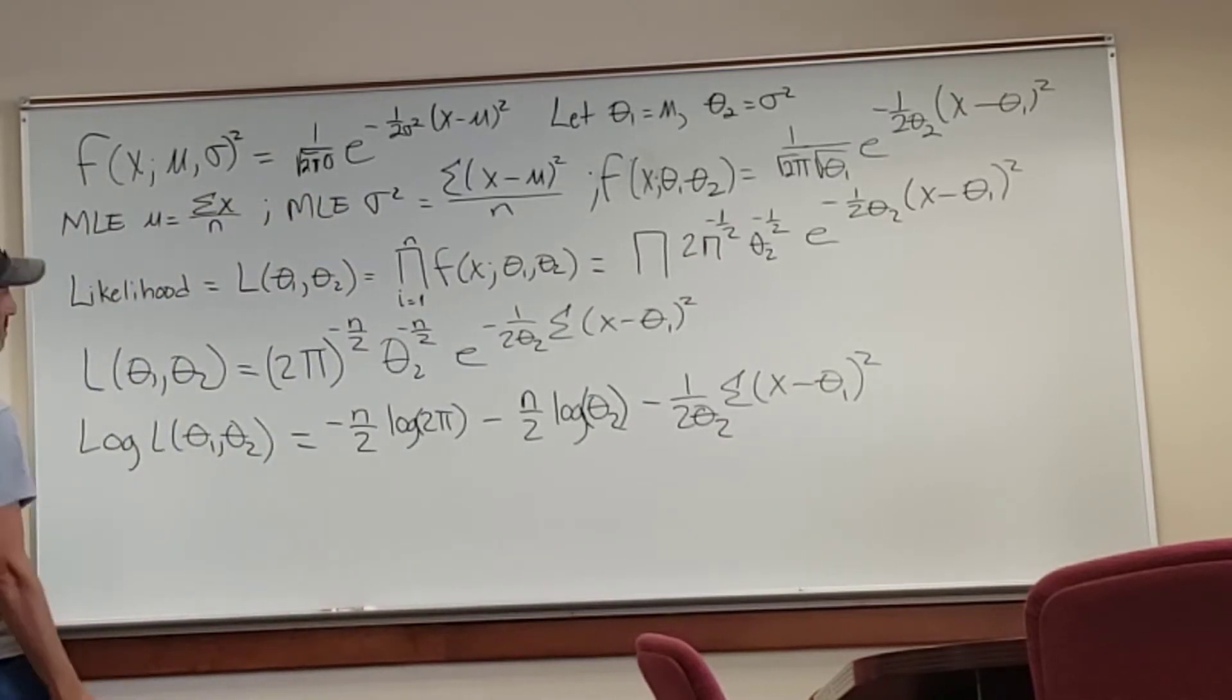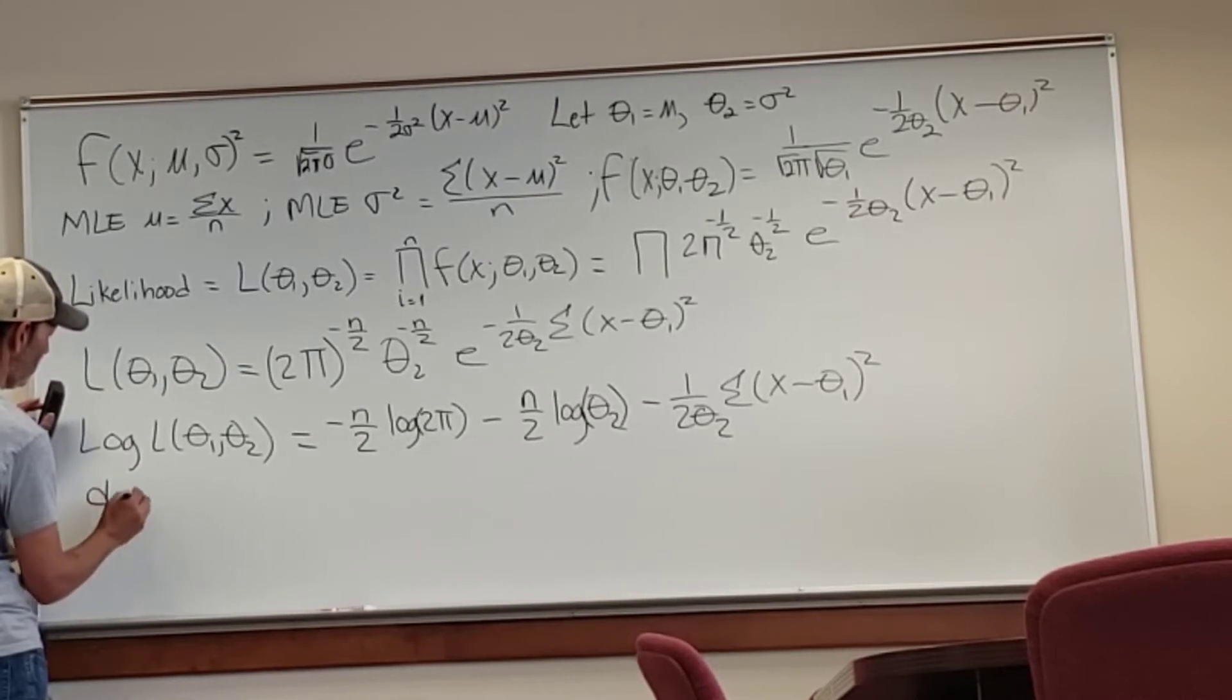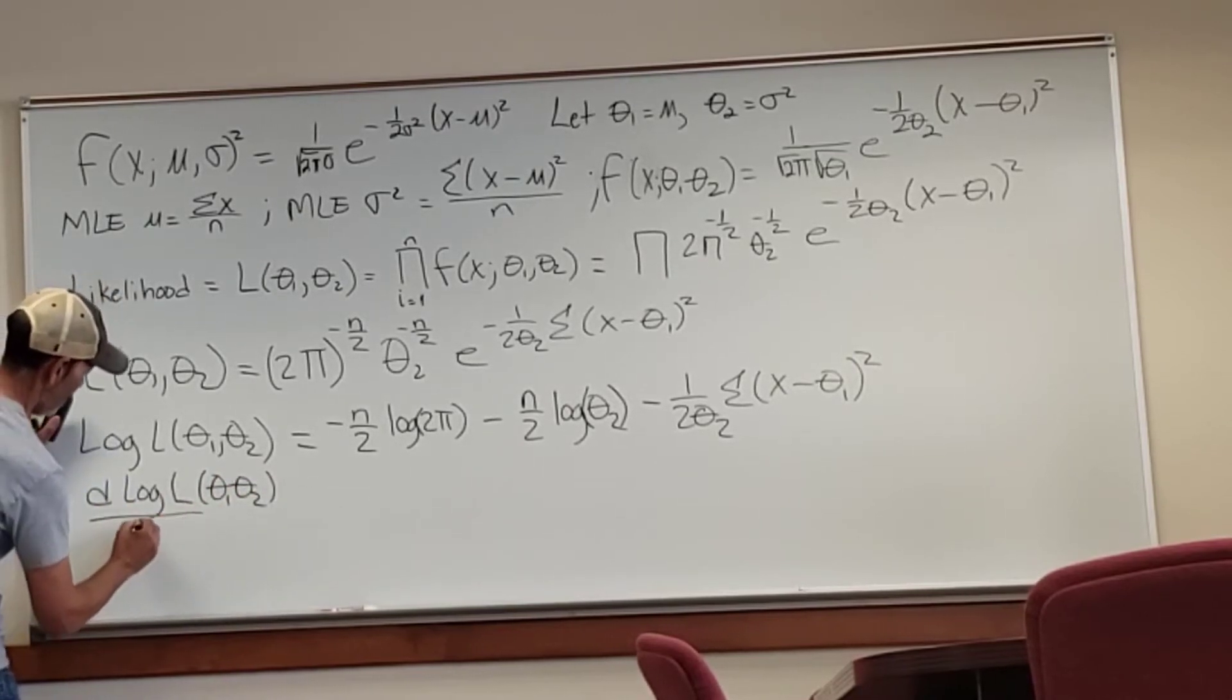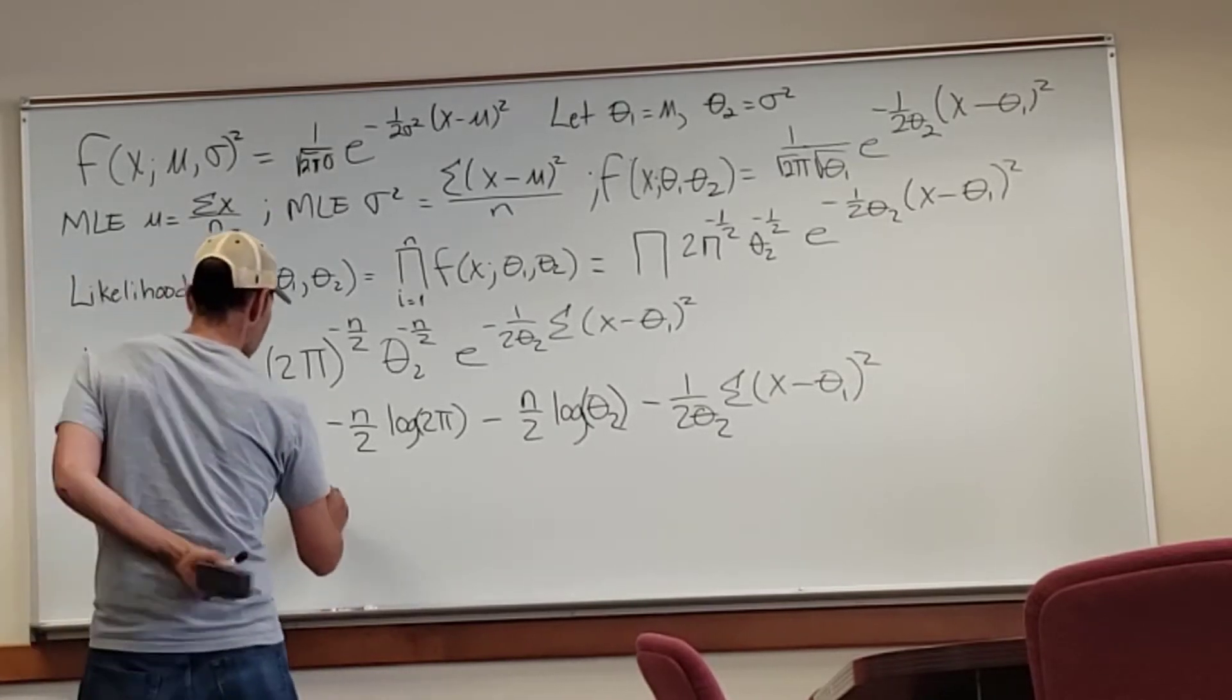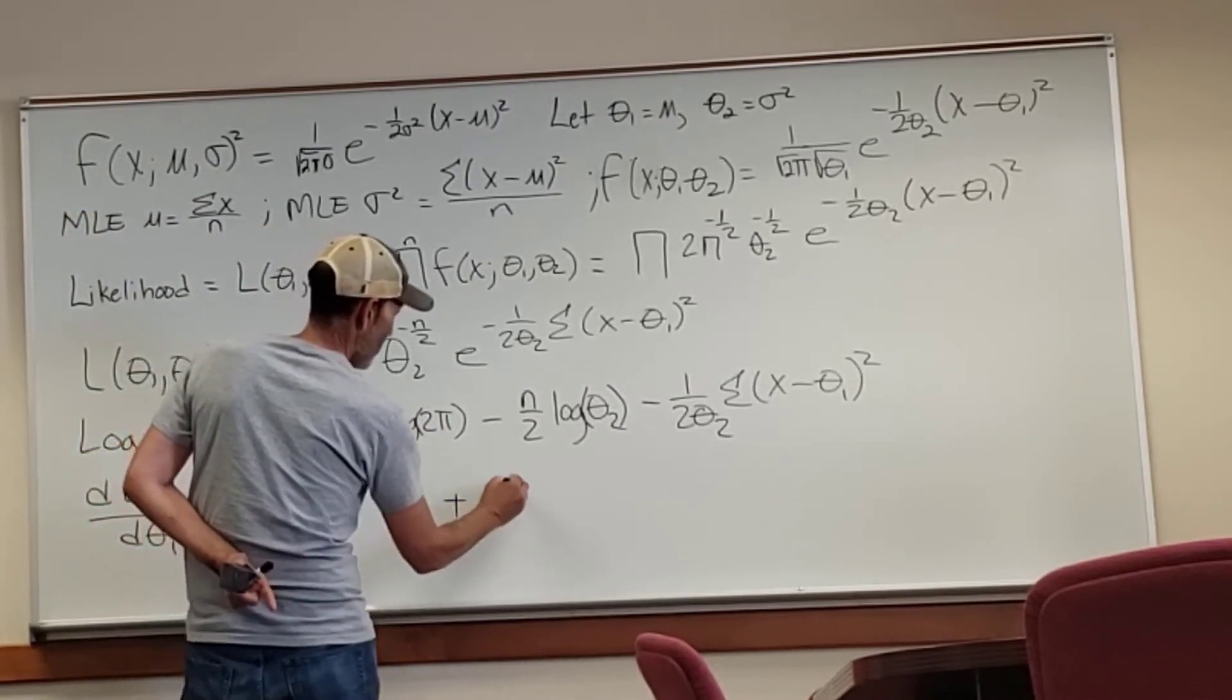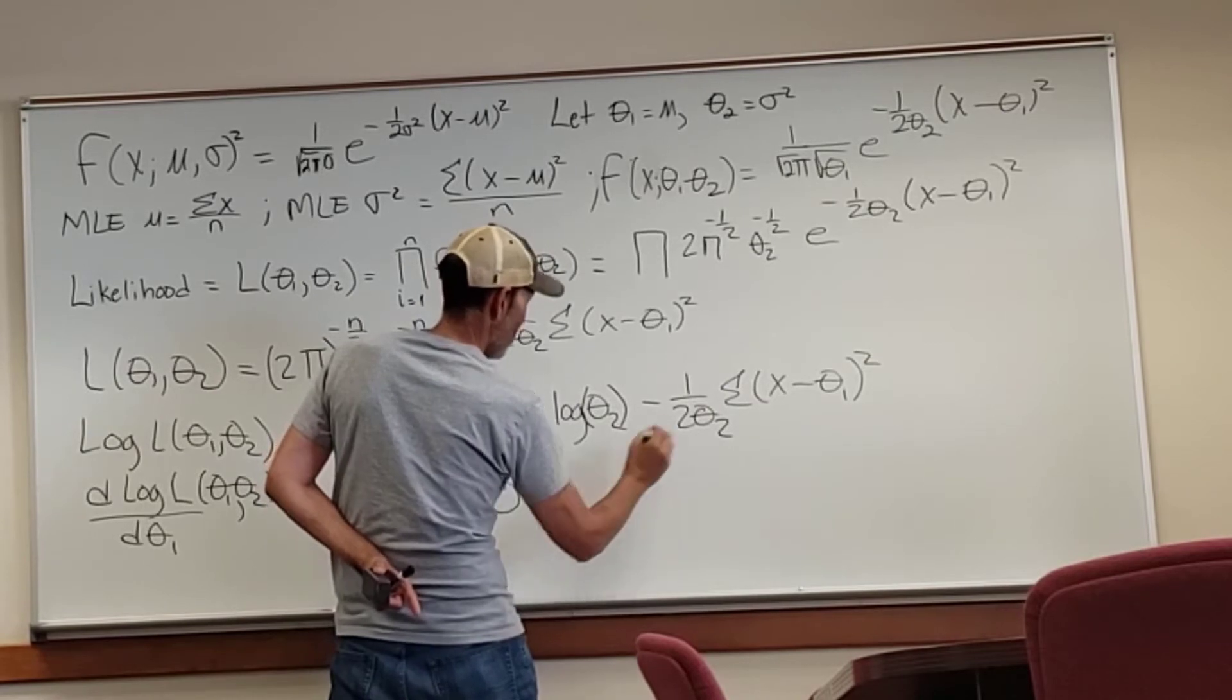Now, we need to start taking derivatives. So we take the first derivative of the log likelihood, given those two parameters, mean and variance, with respect to the first element, which is the mean, theta 1. Well, this first term has nothing. The second term has nothing, so it's just equal to 0. The third term, though, has the theta 1 in it. So we're going to take its derivative.